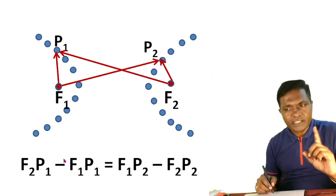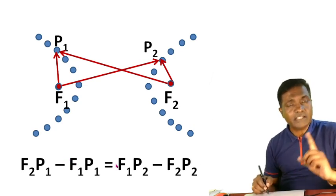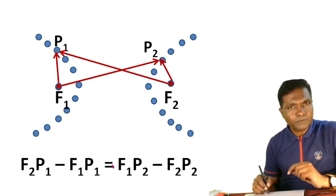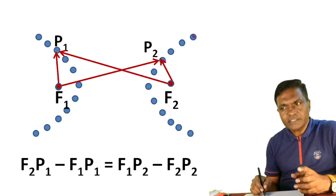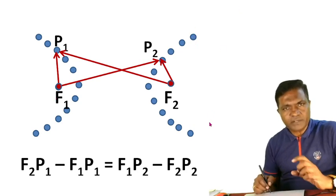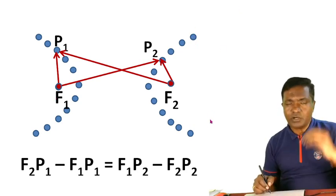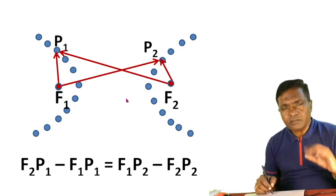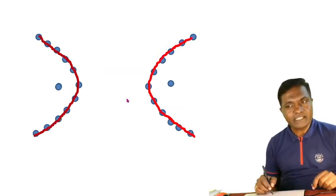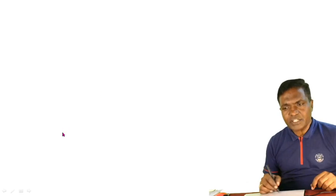This is the distance — the distance is equal to the distance. So, how is the difference in the distance? This is the set of points we will take for hyperbola.